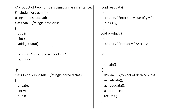Here is an example: product of two numbers using single inheritance. Here class ABC is the base class and XYZ is the derived class. In class ABC, X is the integer and the access specifier is public. The member function is get_data, and with the help of get_data, you are getting the value of X. Then the class is closed.